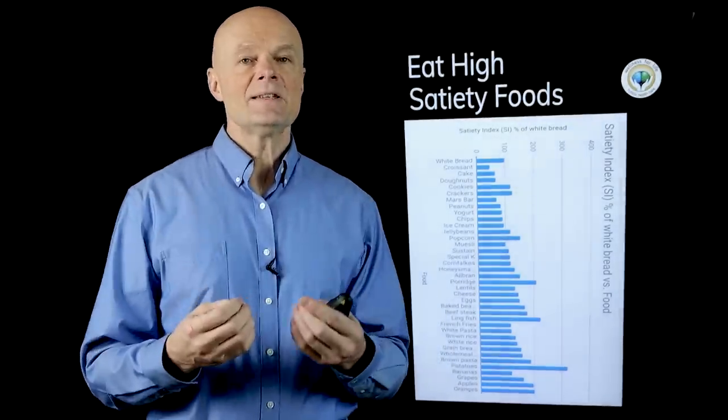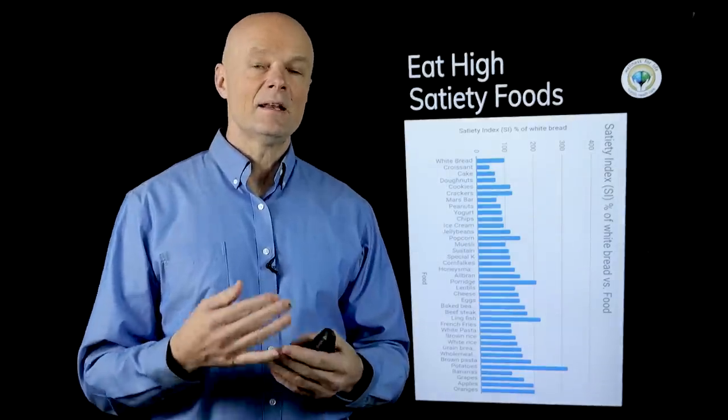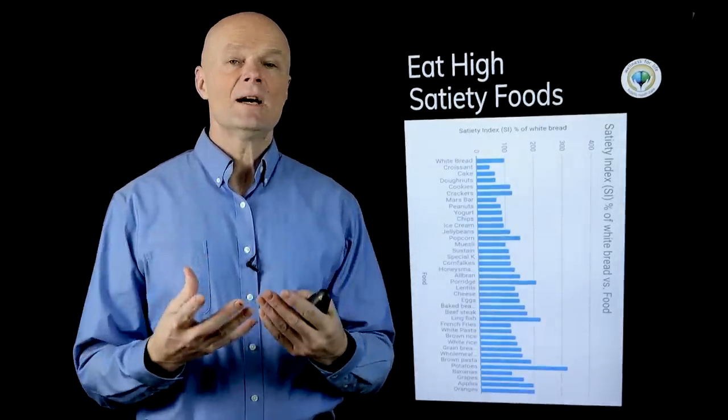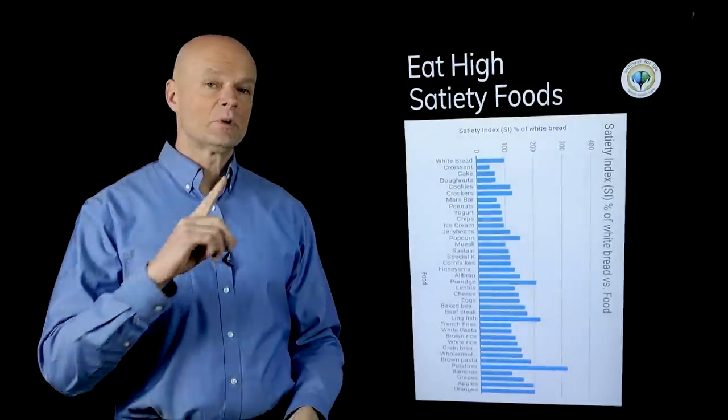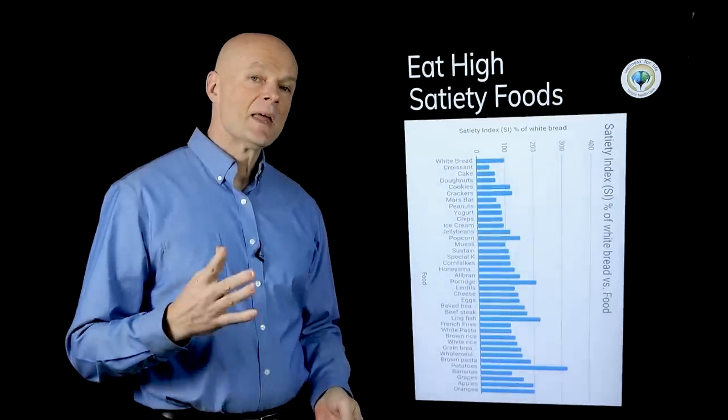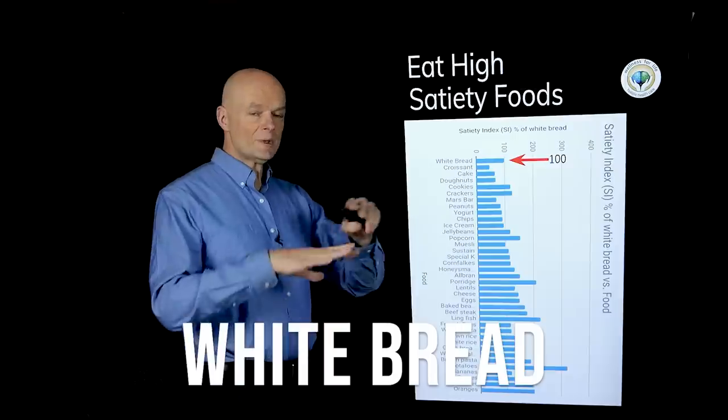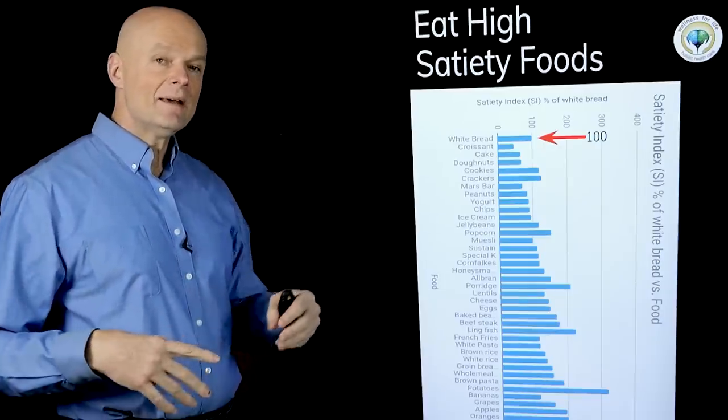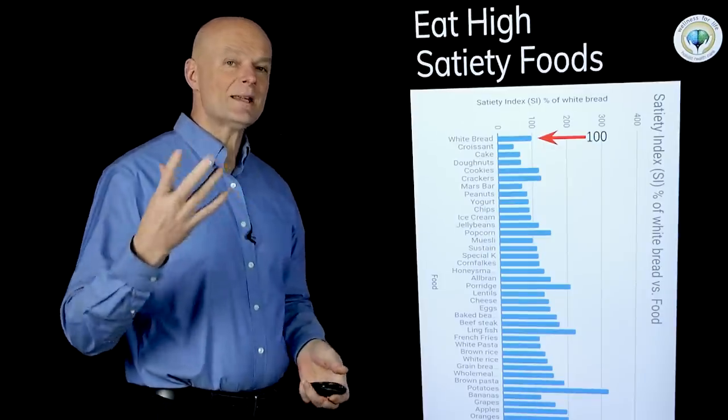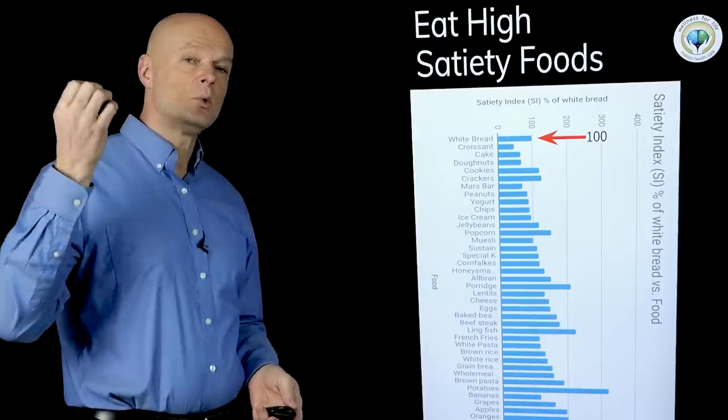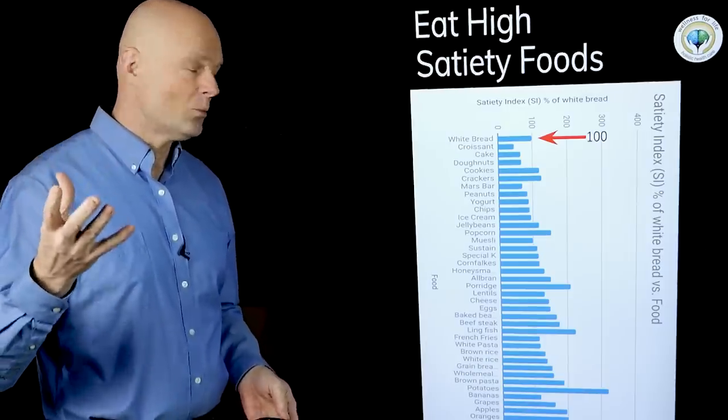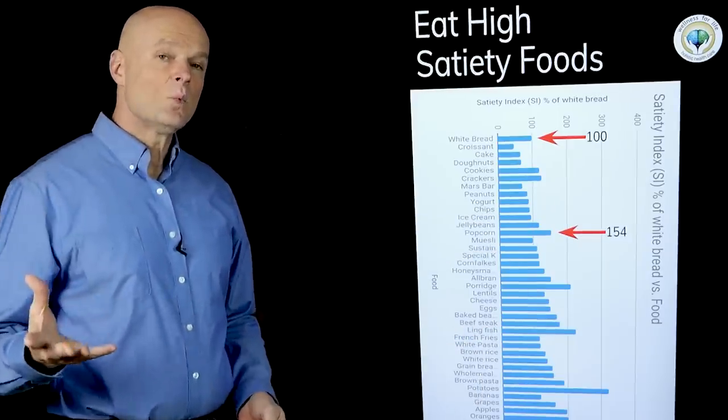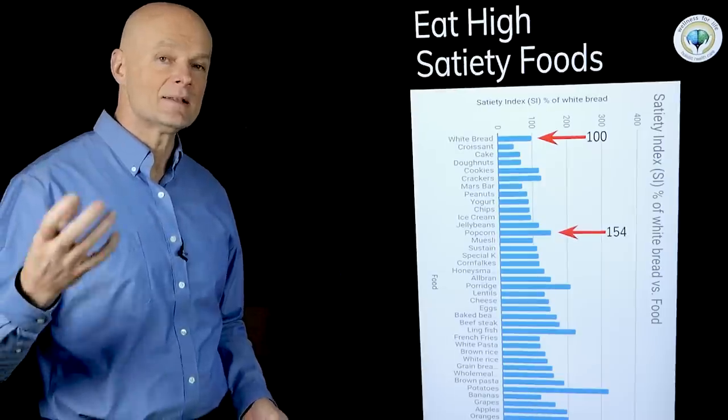Unfortunately it is very difficult to do a study like that and in my opinion they didn't do a really great job. For starters they didn't have a really good idea of what food is. They started out with white bread to assign a basic number. They assigned white bread the number 100 and then all other foods were expressed as a percentage of that. So if it had a higher number it was more satiating than white bread. They found that popcorn for example had 154 so it was one and a half times as satisfying as white bread.